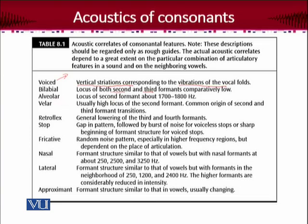For alveolar, the locus of the second formant would be about 1700 to 1800 hertz. For the velar sound, there is usually a high locus of the second formant, with a common origin of second and third formant transitions. For retroflex, there is a general lowering of the third and fourth formants. So if F3 and F4 are lowered, that is a hint that the sound is retroflex.